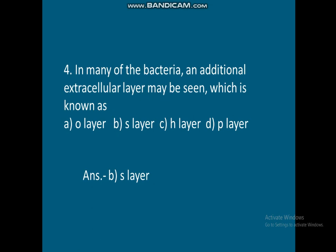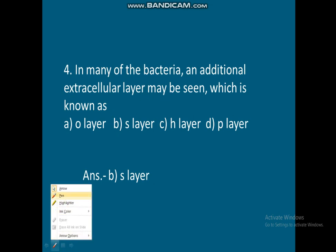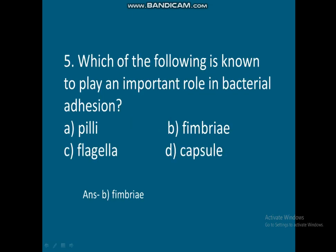Question 4: In many bacteria, an additional extracellular layer may be seen. Which is this layer? Option A: O layer. Option B: S layer. Option C: H layer. Option D: P layer. Correct answer is Option B — S layer.